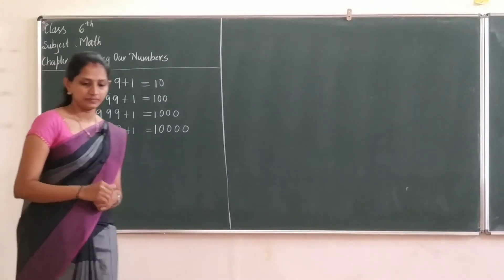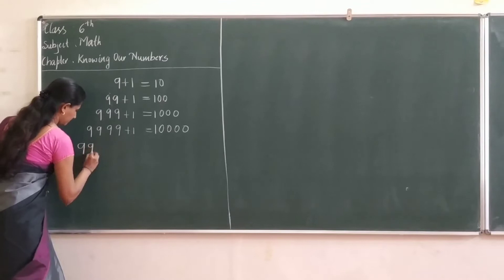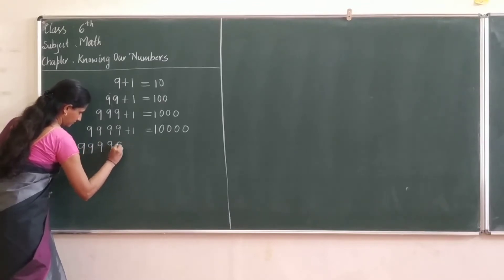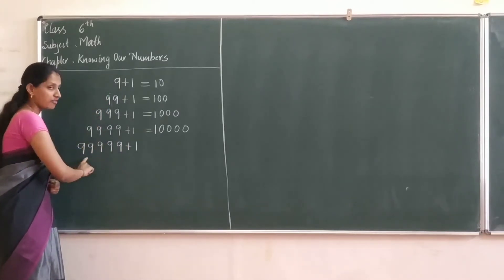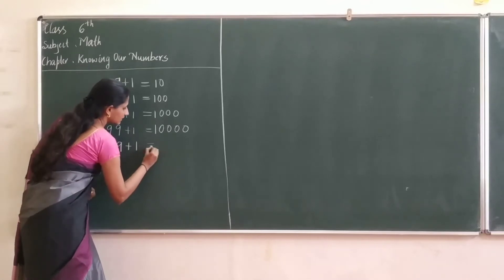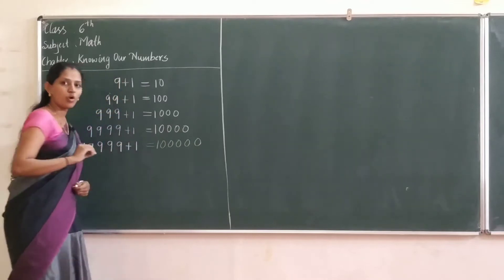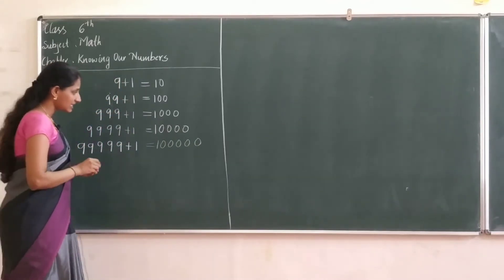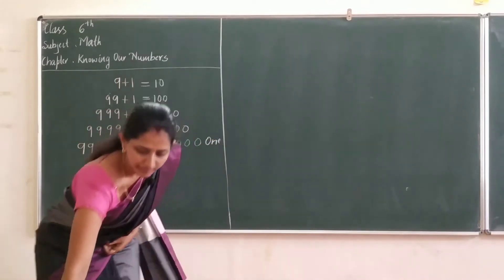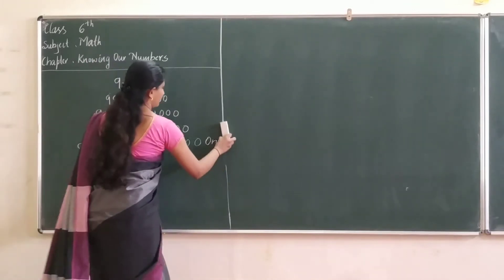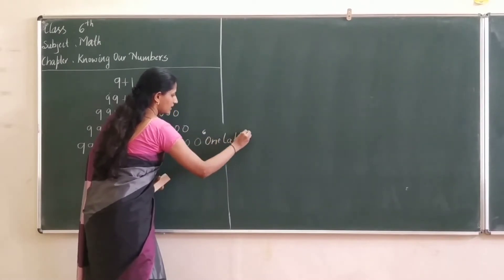What is the greatest 5-digit number? I will add 1 to the greatest 5-digit number, then I will get the smallest 6-digit number. That is 1 lakh.